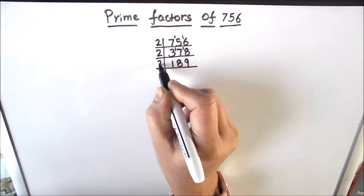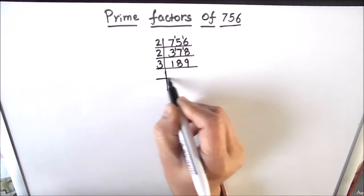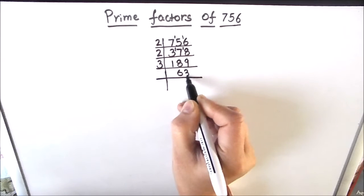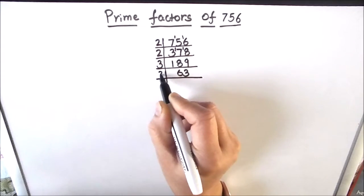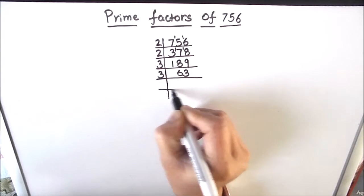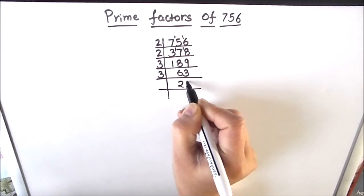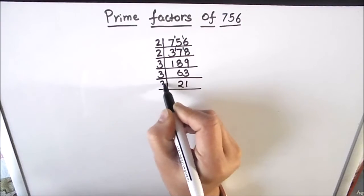63 is also divisible by number 3. 3 times 2 is 6 and 3 times 1 is 3. 21 is also divisible by number 3. 3 times 7 is 21.